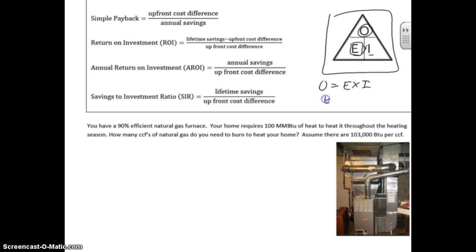Efficiency is output over input, so you have this line over input. That means that input is output over efficiency.